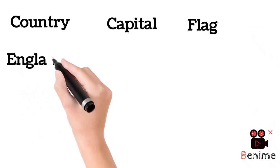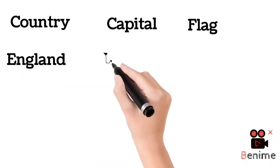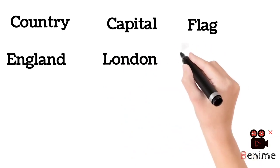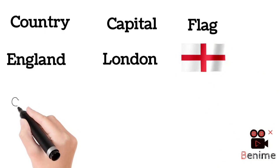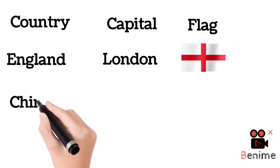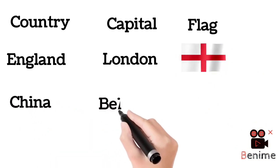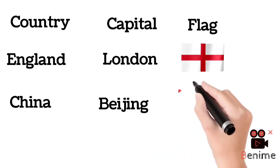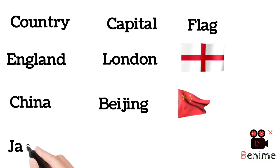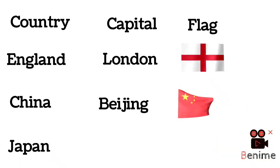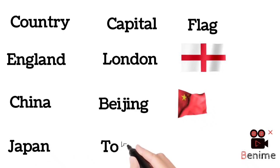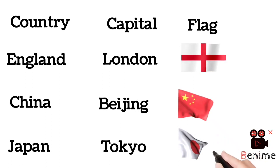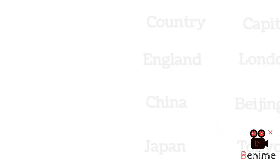Country name is England, and this is the flag of England. Country name is China, capital is Beijing, and this is the flag of China. Country name is Japan, capital is Tokyo, and this is the flag of Japan.